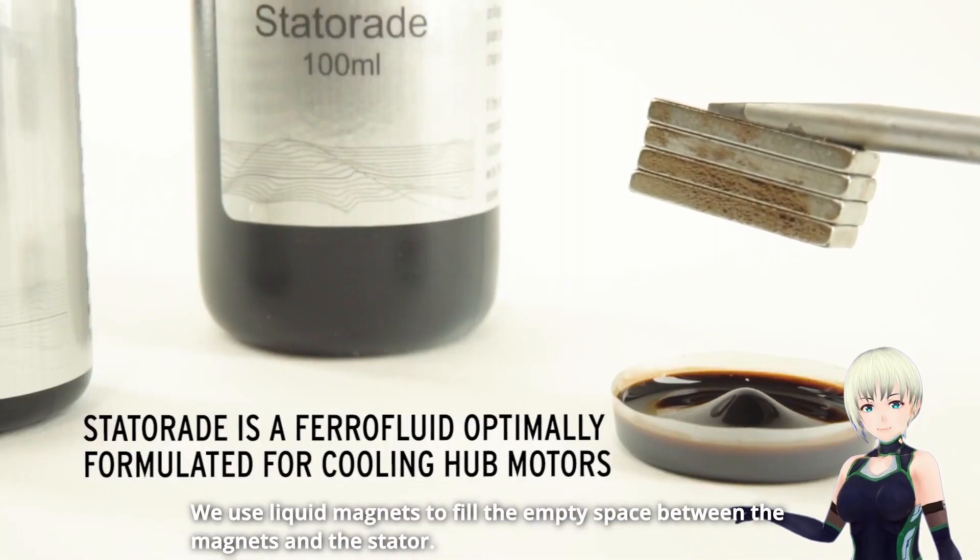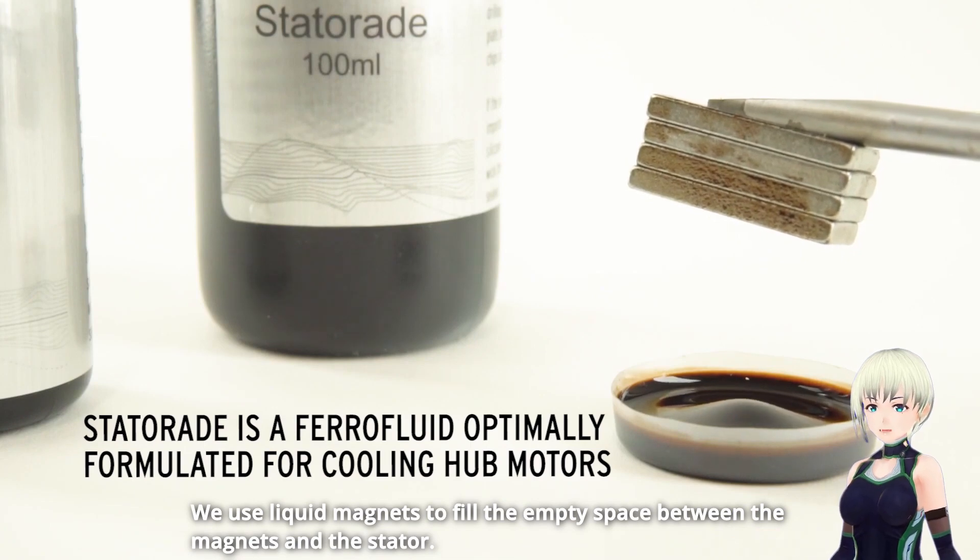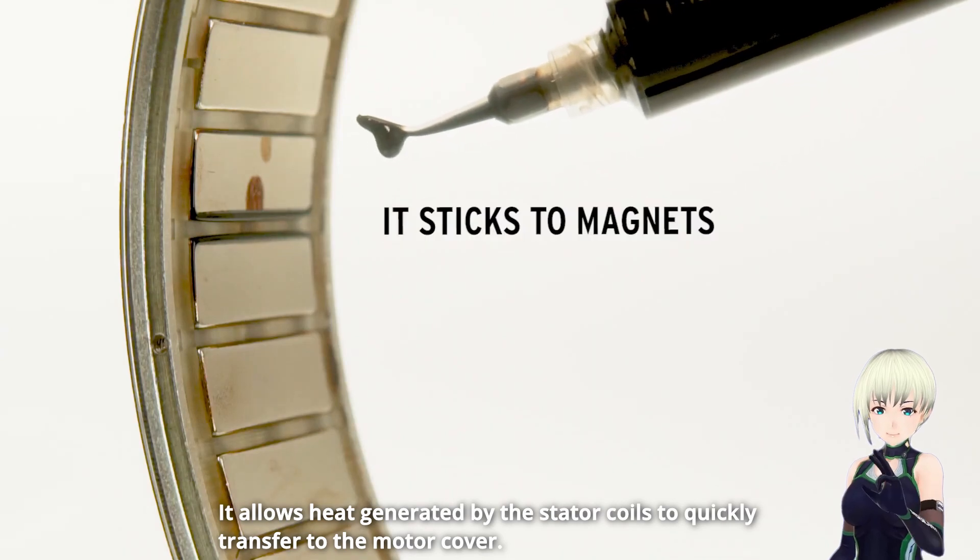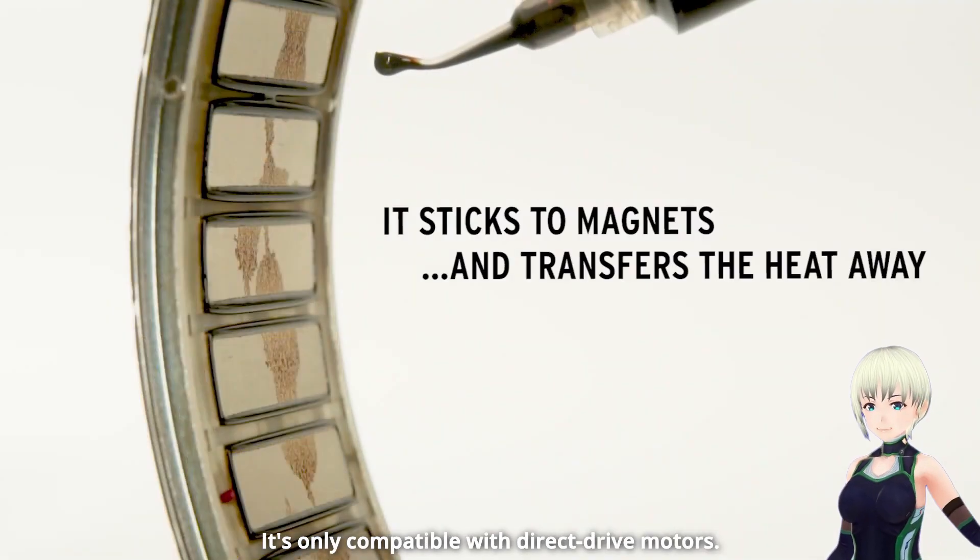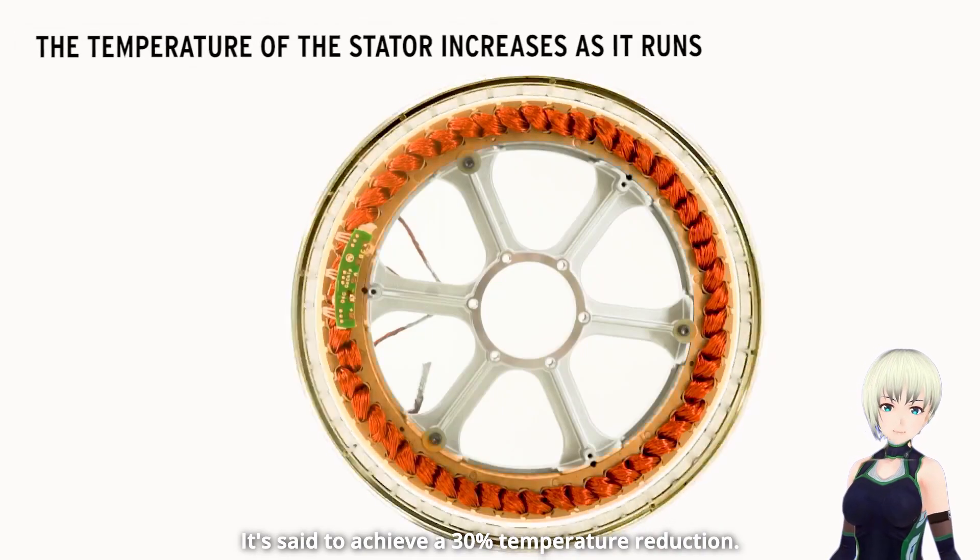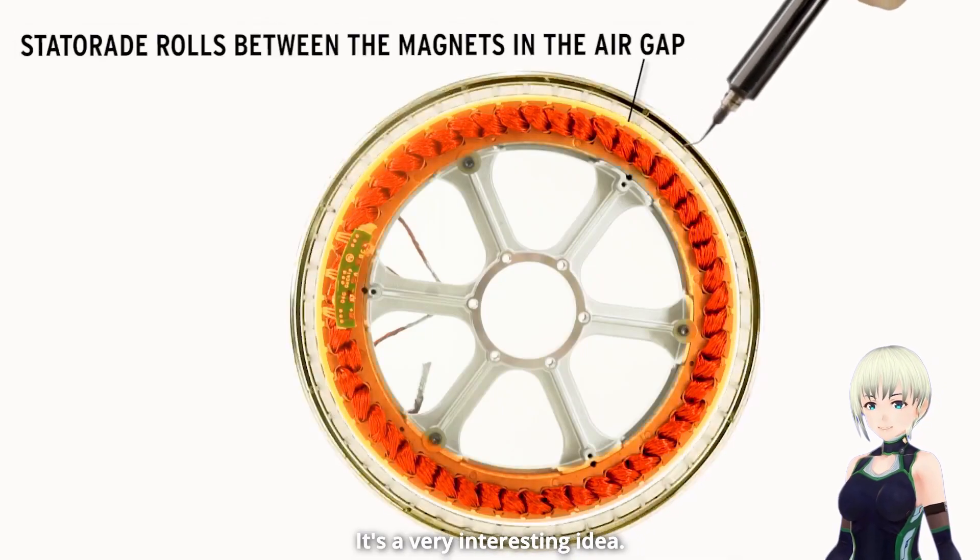We use liquid magnets to fill the empty space between the magnets and the stutter. It allows heat generated by the stutter coils to quickly transfer to the motor cover. It's only compatible with direct drive motors. It's said to achieve a 30% temperature reduction. It's a very interesting idea.